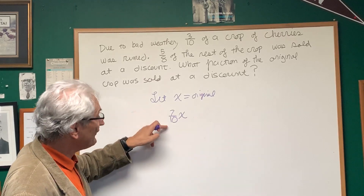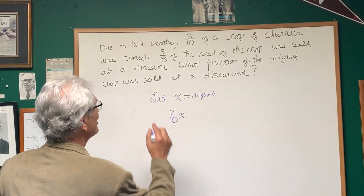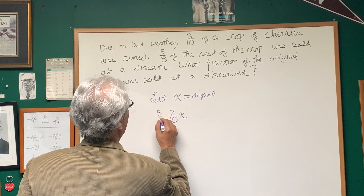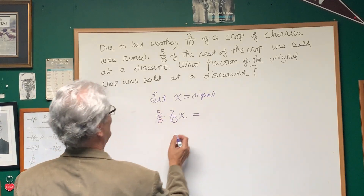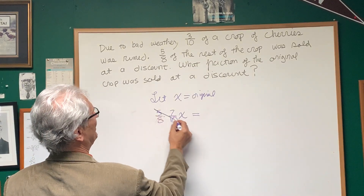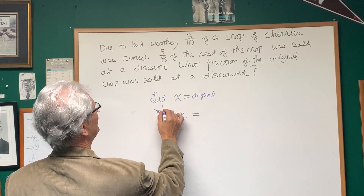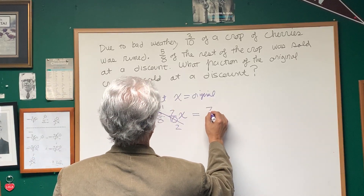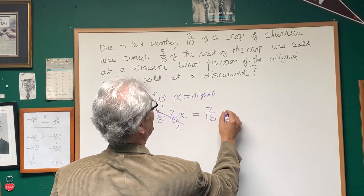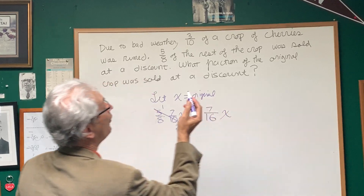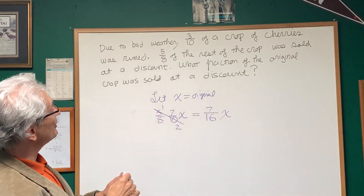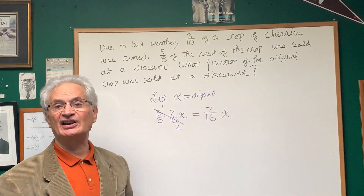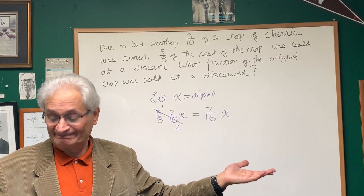Well, five-eighths of the portion that was good. So we're going to multiply seven-tenths by five over eight. Five goes into ten twice, and we'll have one times seven is seven, eight times two is sixteen. So what fraction of the original crop was sold at a discount? Seven-sixteenths — just under one-half.